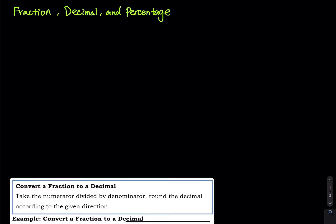So let's say I have a cake. The shape of the cake is a square. Let's draw a square. I am going to cut this cake into four pieces, and I am going to take one piece — this piece right here.